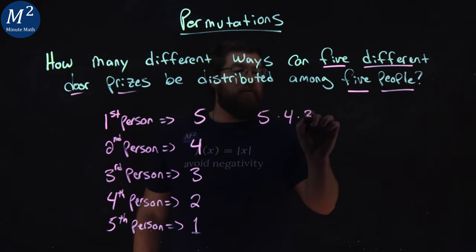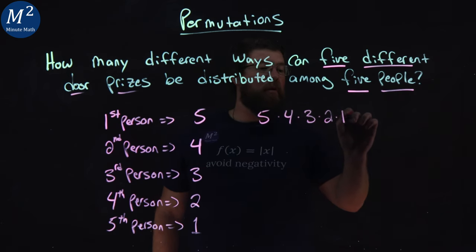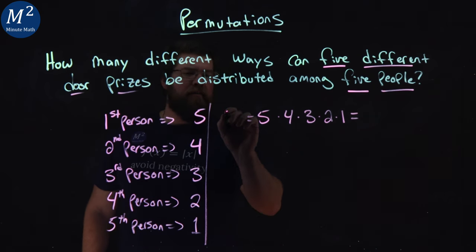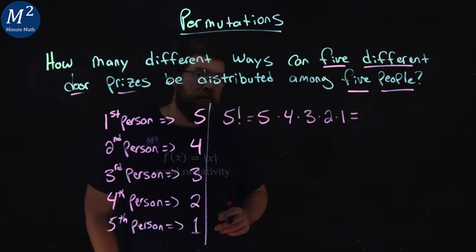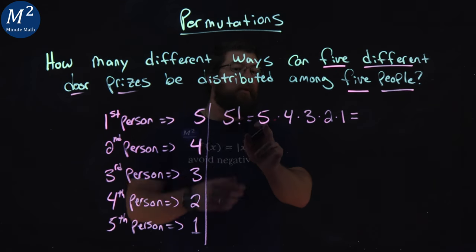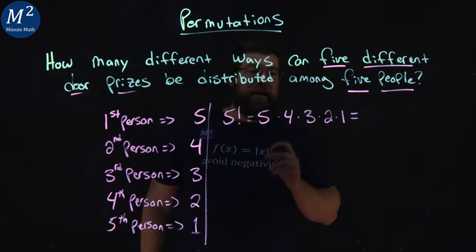Five times four times three times two times one, which is actually the same thing as five factorial. Five factorial takes the first number that we have, the five, and we're multiplying each integer on the way down to one.